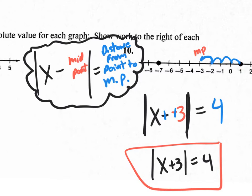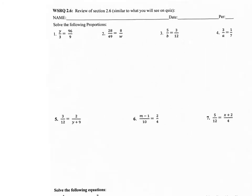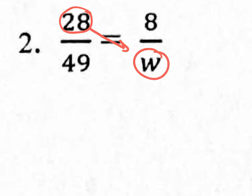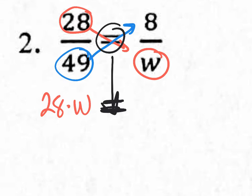Let's jump to the other worksheet — WSQR 2.6. The second half of the quiz tomorrow deals with cross-multiplying. The odd ones are already on a separate video. Cross-multiply works by taking this number, multiplying it by that value, and the equal sign comes down in between. For number 2: 28 times W equals 49 times 8, which is 392. So we have 28W equals 392.